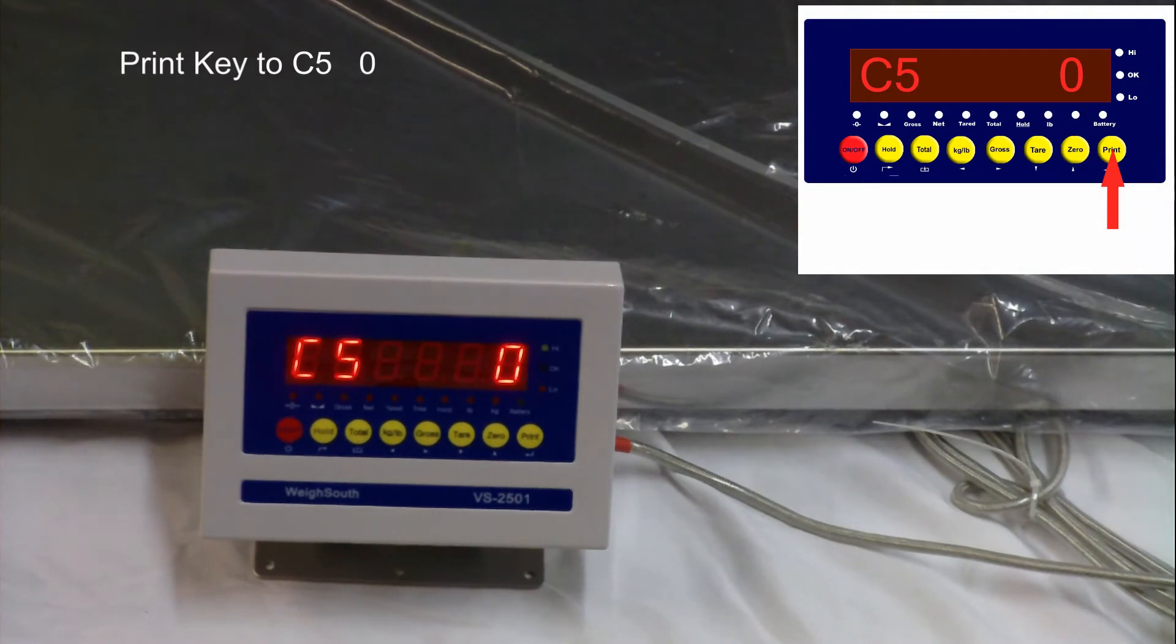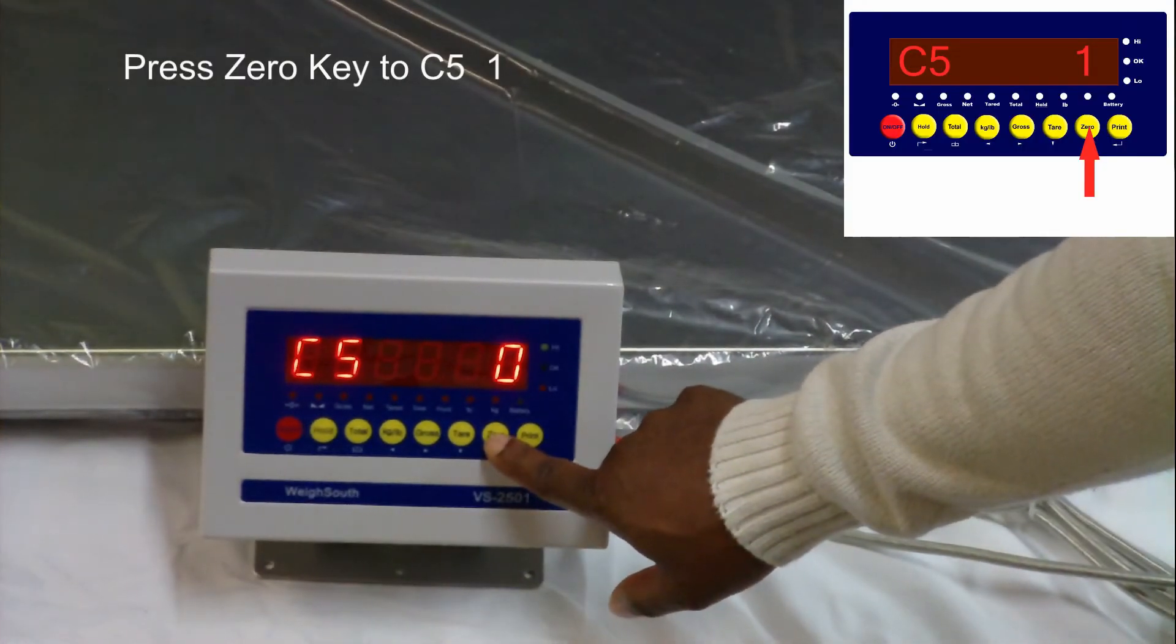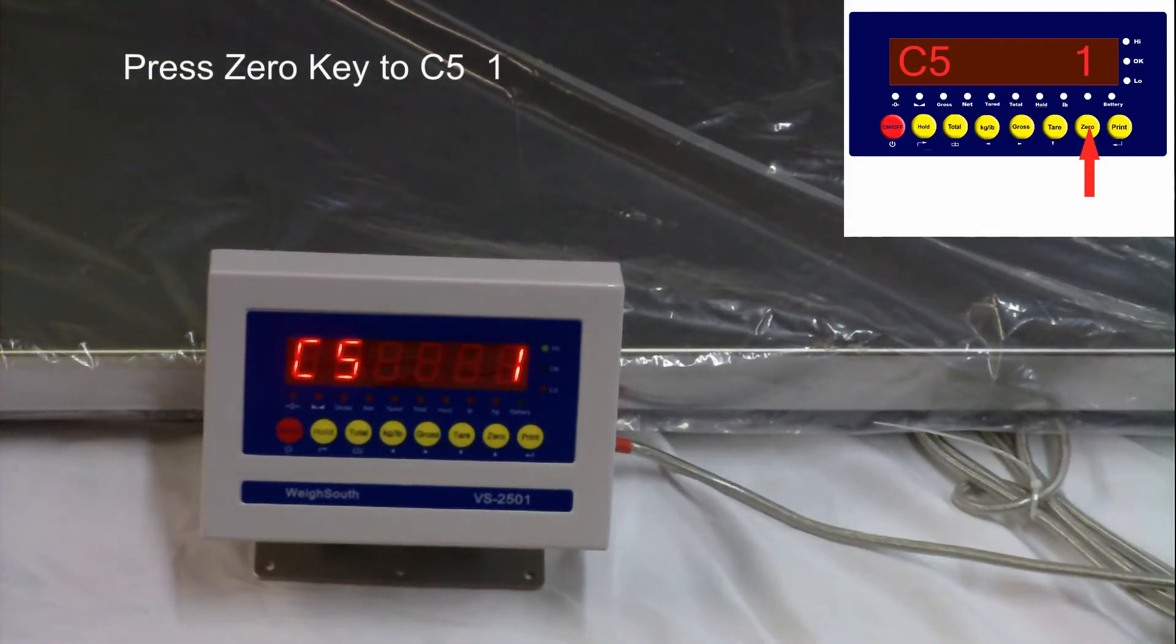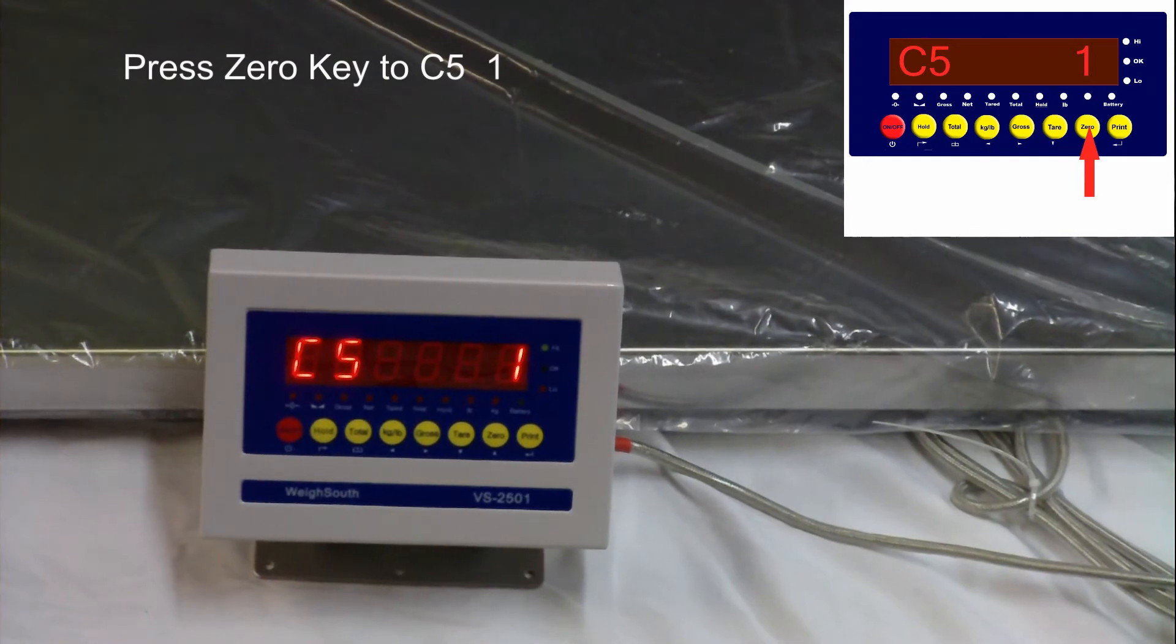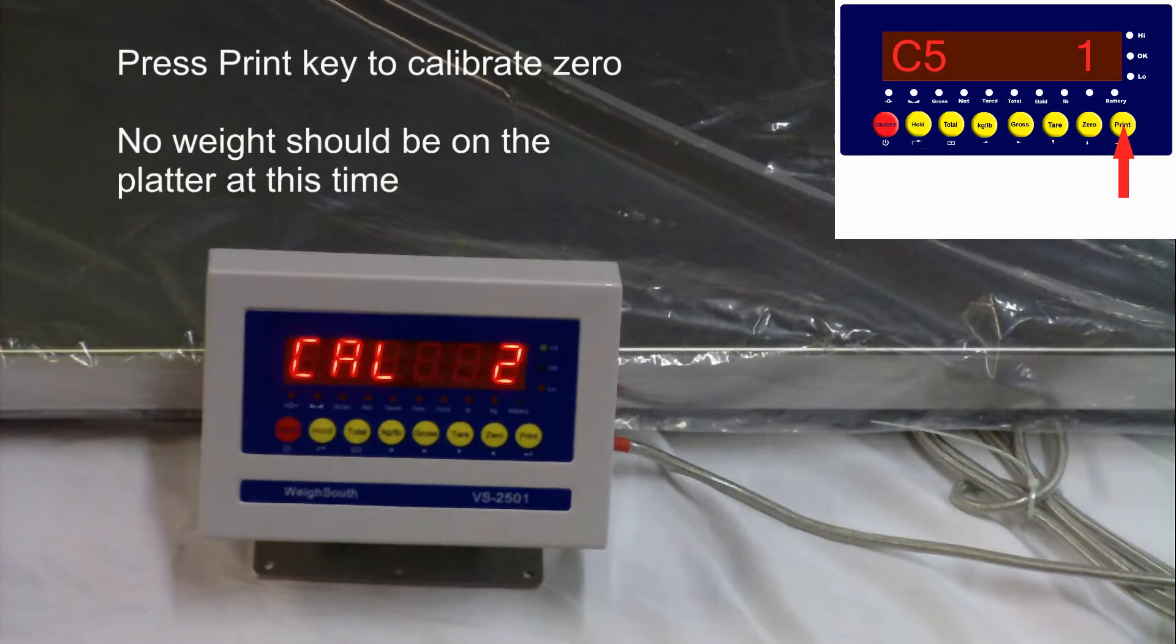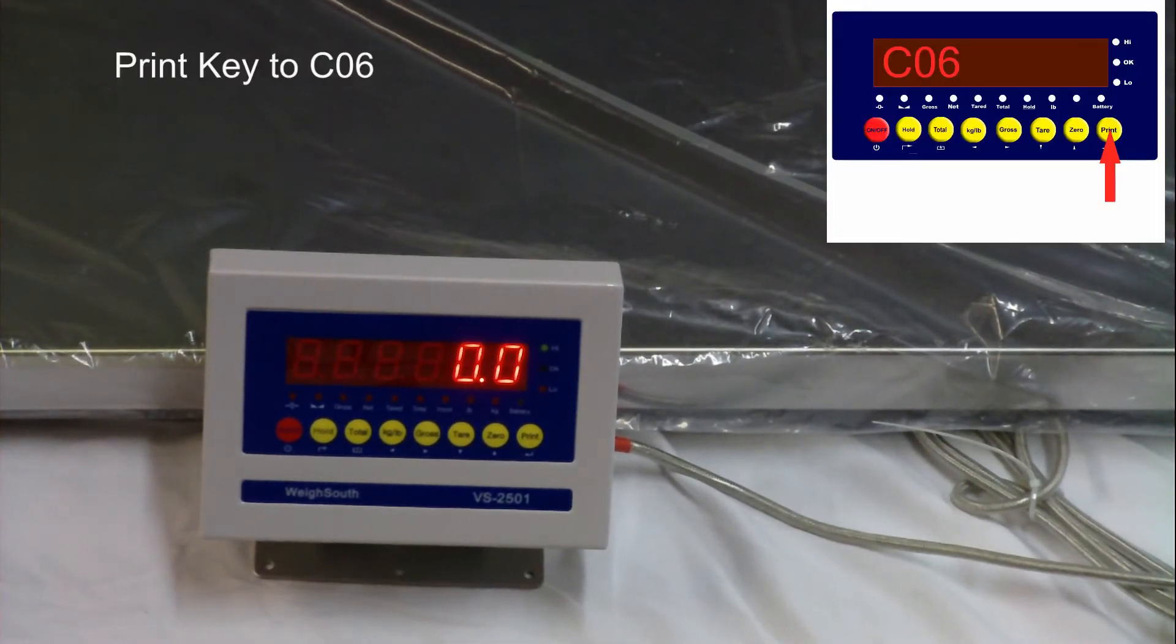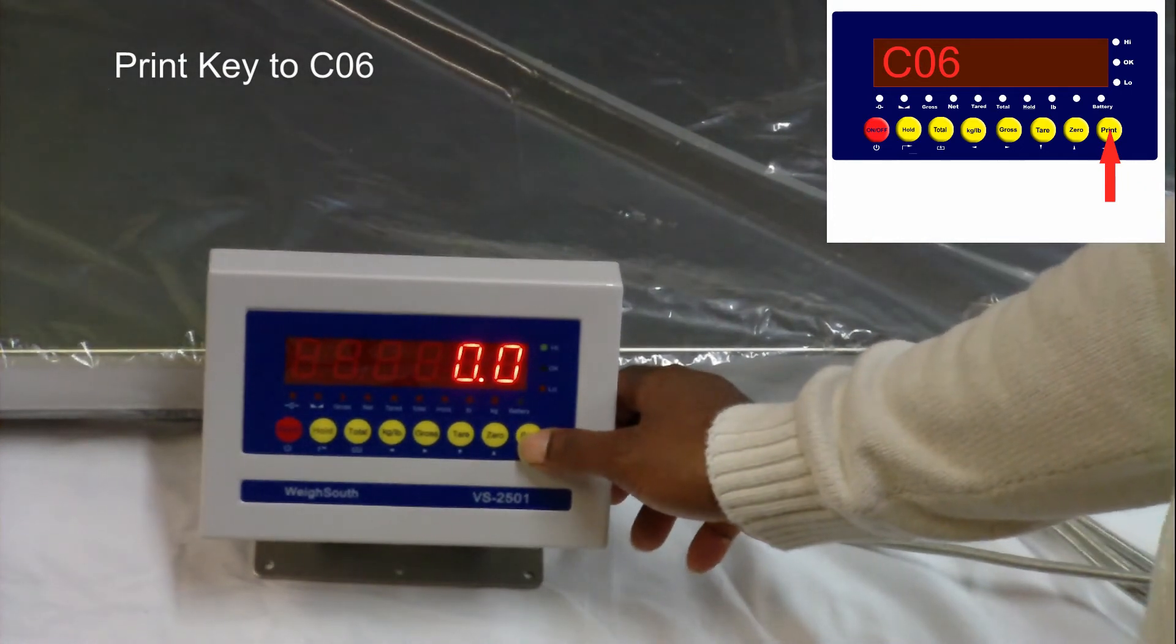To start calibration, make sure that the weighing surface is clear. Press the zero key to change the submenu from 0 to 1. Once set, press the print key to begin calibration. The VS2501 will display countdown and rest on 0.0, ensuring that the zero point has been set. Press the print key to move to the next C function.